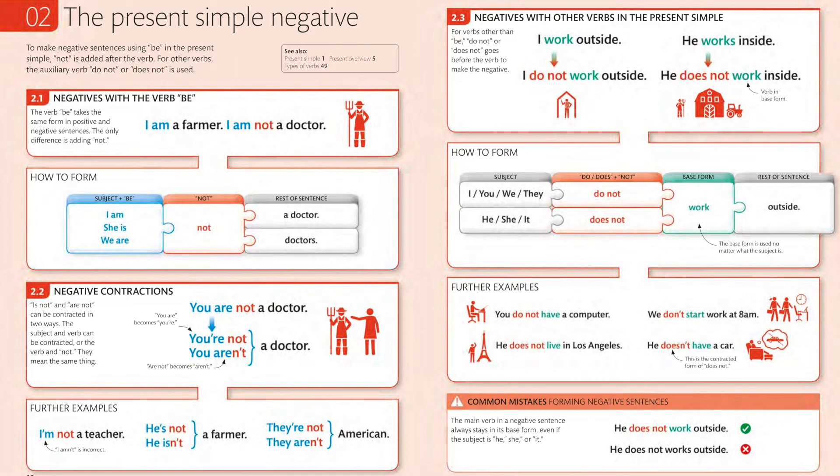To form the negative, we say: I / you / we / they → 'do not work outside.' He / she / it → 'does not work outside.' It's hard to think of an example with 'it' unless we're talking about a software program or something that doesn't work outside the functionality of the institution.